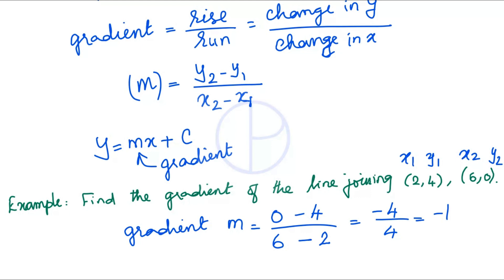The gradient of −1 means that for every 1 unit the x-value increases (moves right), the y-value decreases by 1 unit (moves downwards). So the line moves downwards by 1 unit for every 1 unit towards the right.